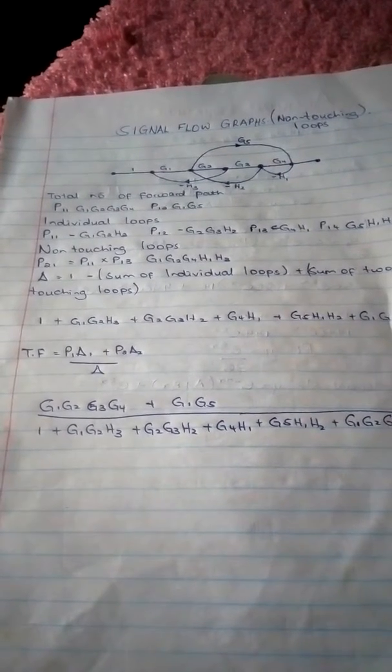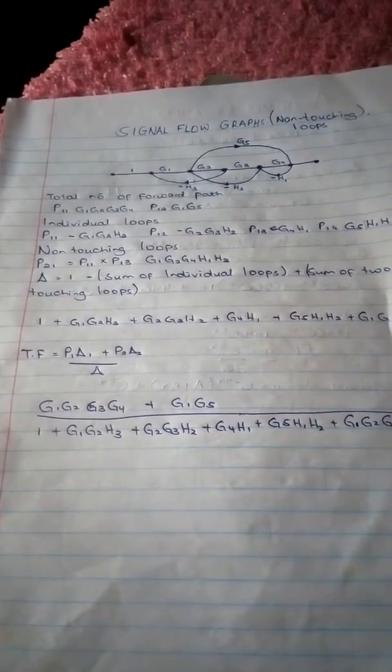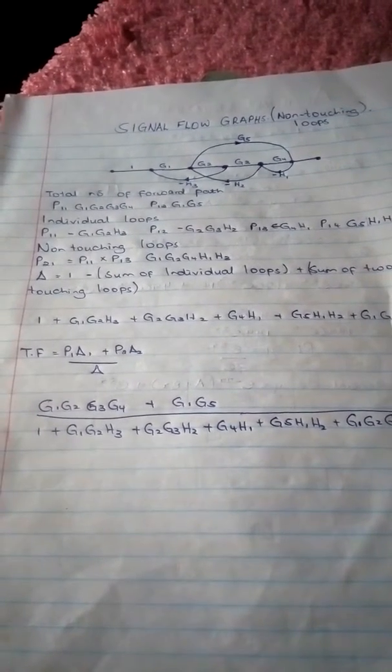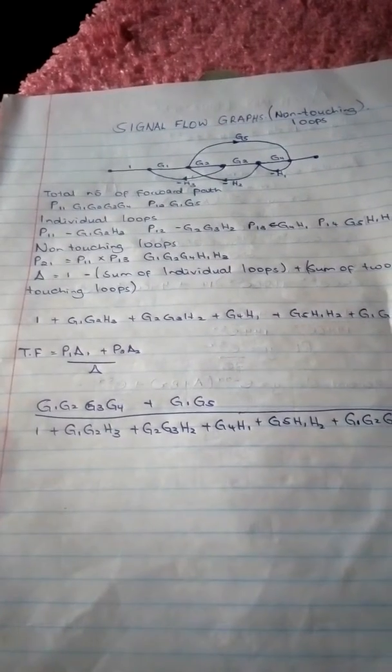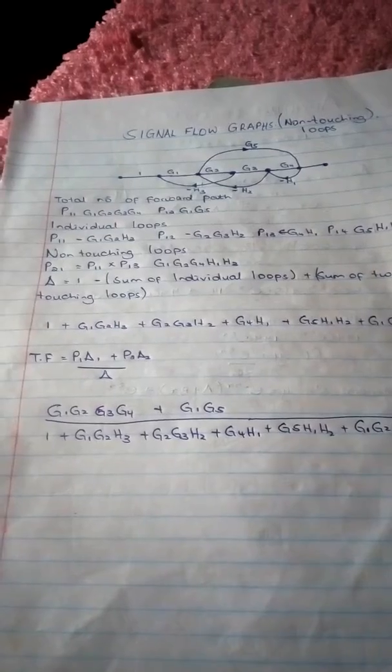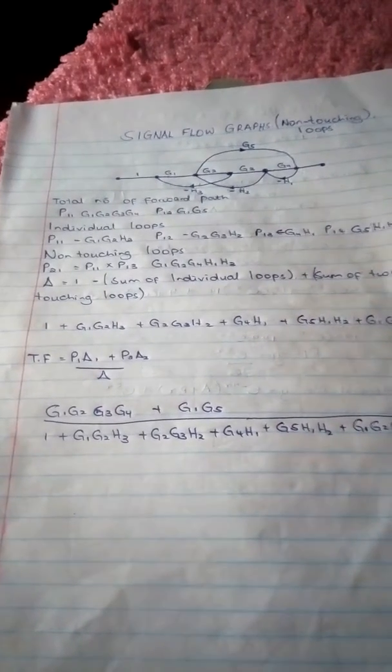You're supposed to first get the total number of forward paths. For example, in this case we have two forward paths: G1 G2 G3 G4 and G1 G5. Those are the forward paths.